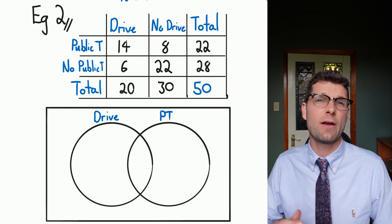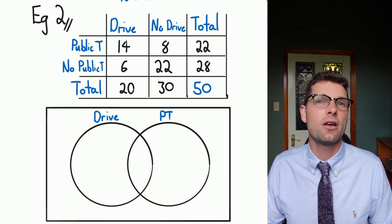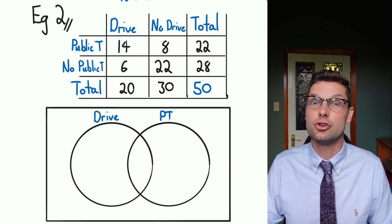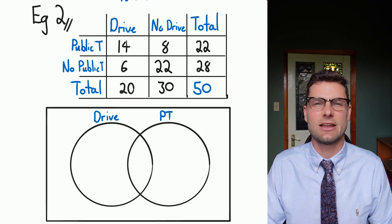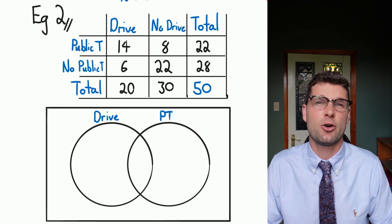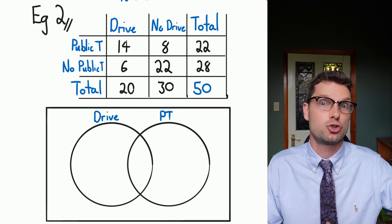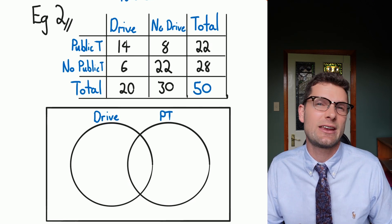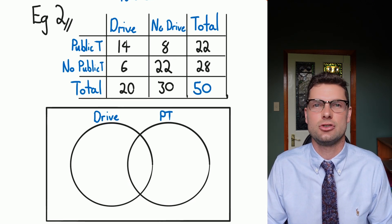So for this second example we've asked people if they drive or use public transport. There could be people that use both. Maybe some days they drive, some days they take public transport, or maybe they get driven to the bus stop or something like that. So we can have both, so these aren't mutually exclusive.